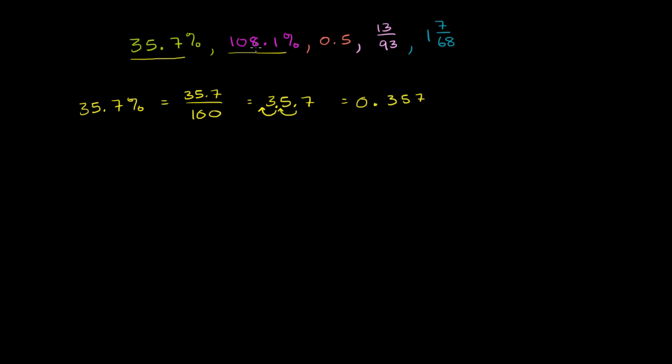Now let's think about 108.1%. 108.1% is the same thing as 108.1 divided by 100. If you divide by 10, you move the decimal to the left once. If you divide by 100, you move the decimal to the left twice. So this is the same thing as 1.081. And so it's clearly greater, and obviously these were both in percentage. I didn't even have to convert them to realize that 35.7% is smaller than 108.1%.